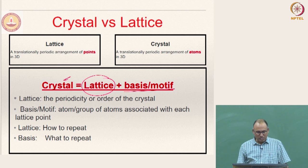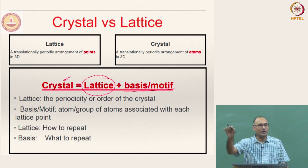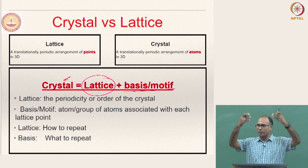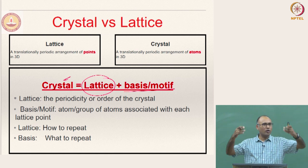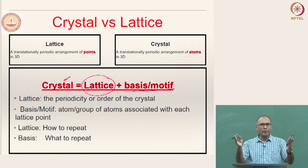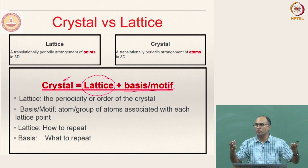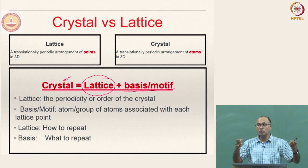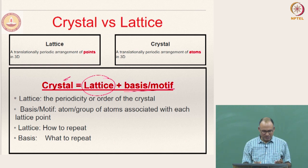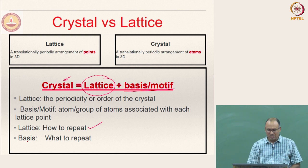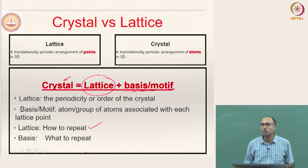What the lattice tells you is how to repeat the points. Once you have the points, you can reconstruct the entire structure because it tells you how to repeat them. Lattice tells us how to repeat. Basis or motif tells us what to repeat.